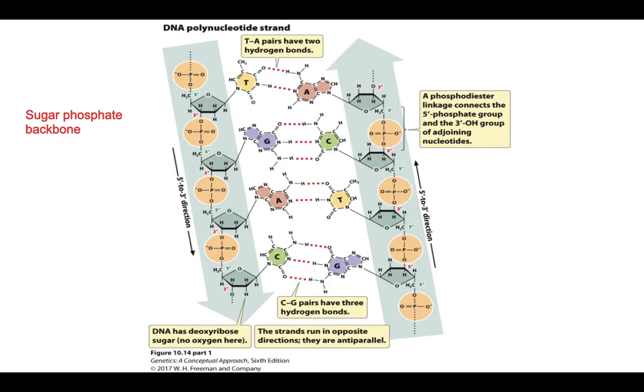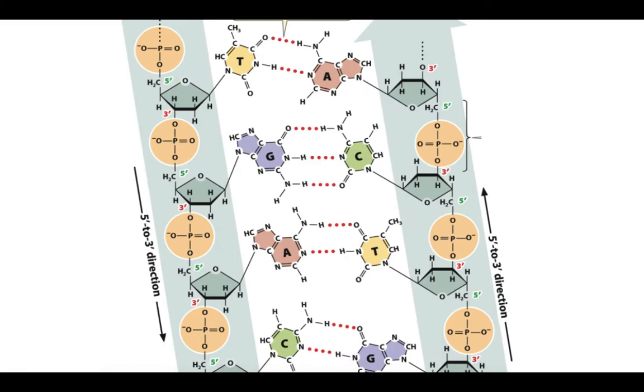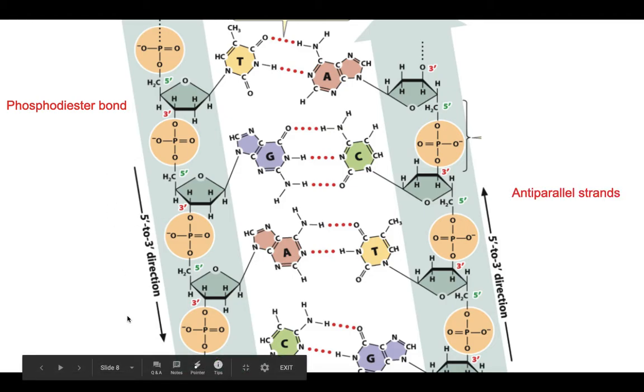The sugar and the phosphate form the backbone. A phosphodiester bond forms when the 3' end of one nucleotide bonds with the 5' end of the next one. The DNA strands are anti-parallel since one strand runs from 5' to 3' in one direction and the other strand runs from 5' to 3' in the other direction.